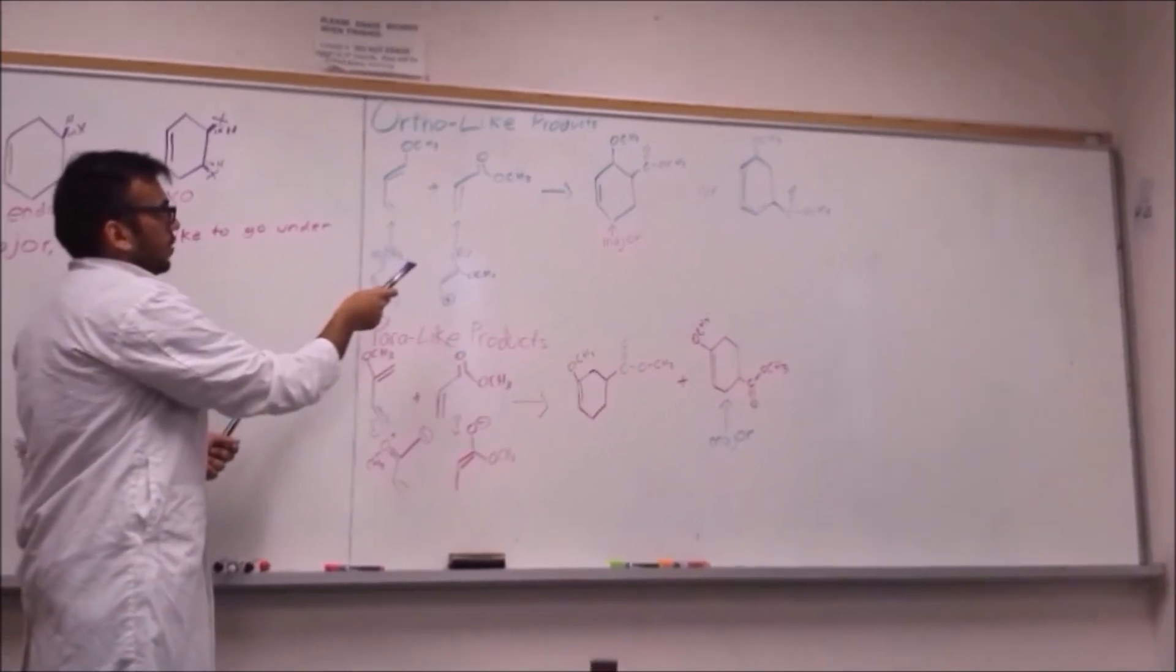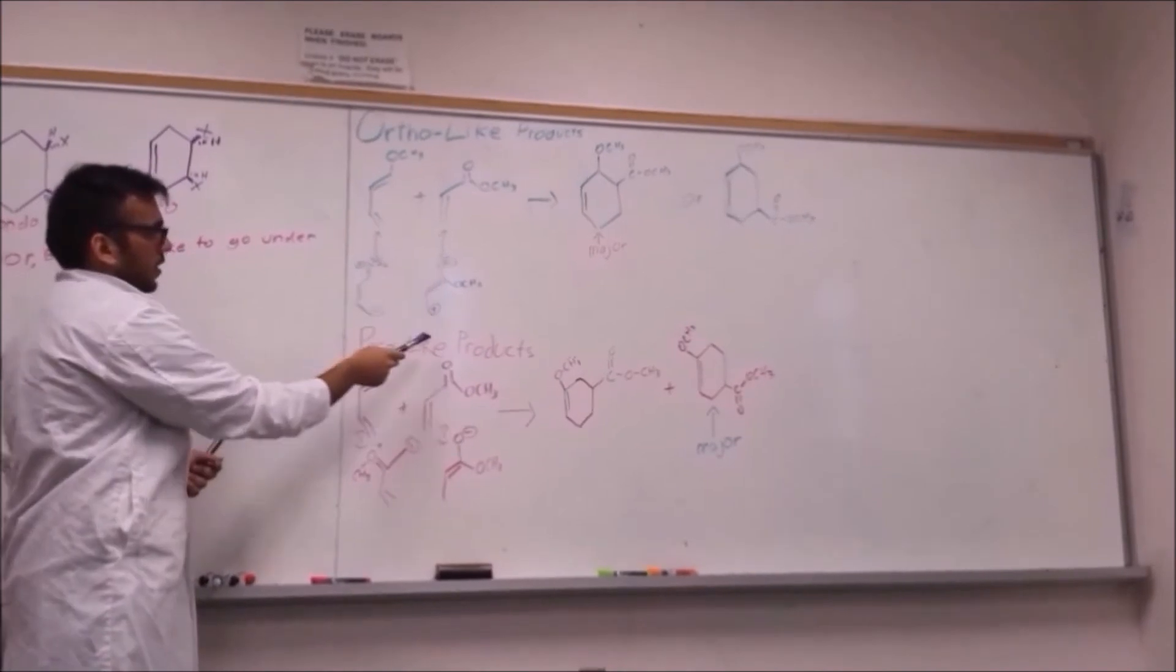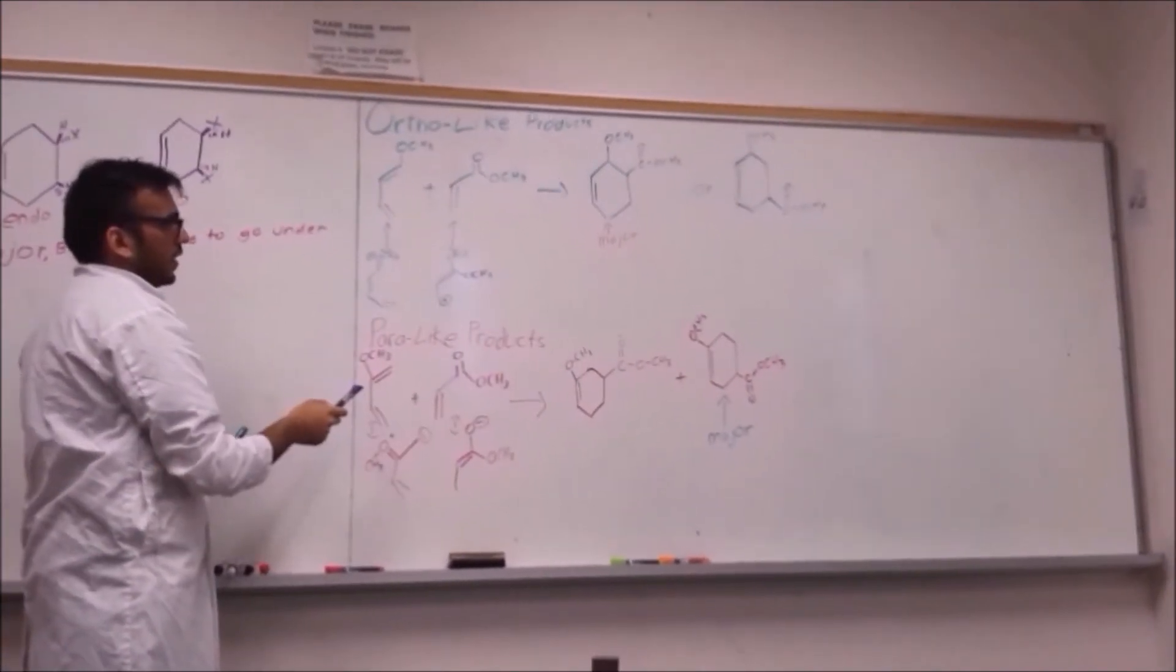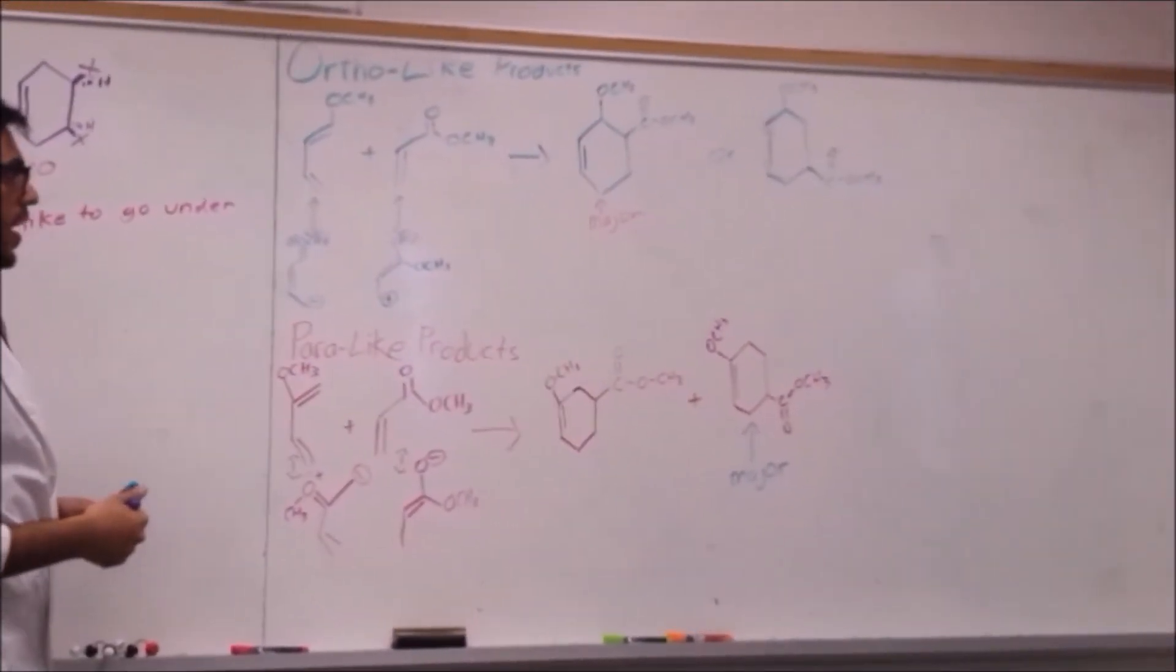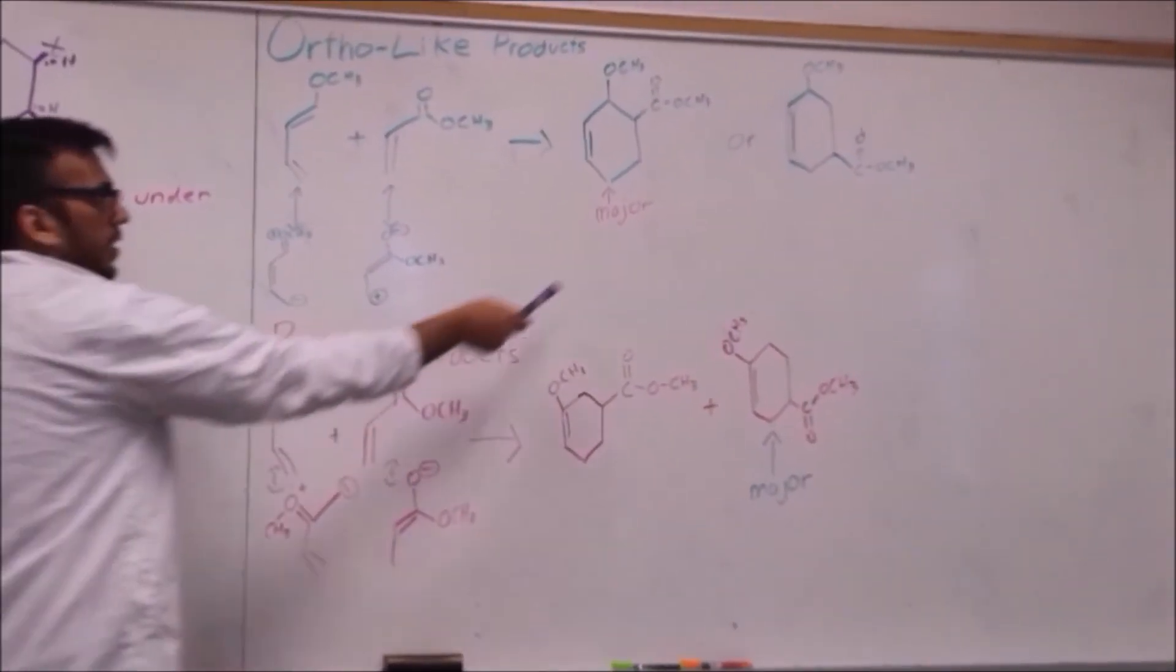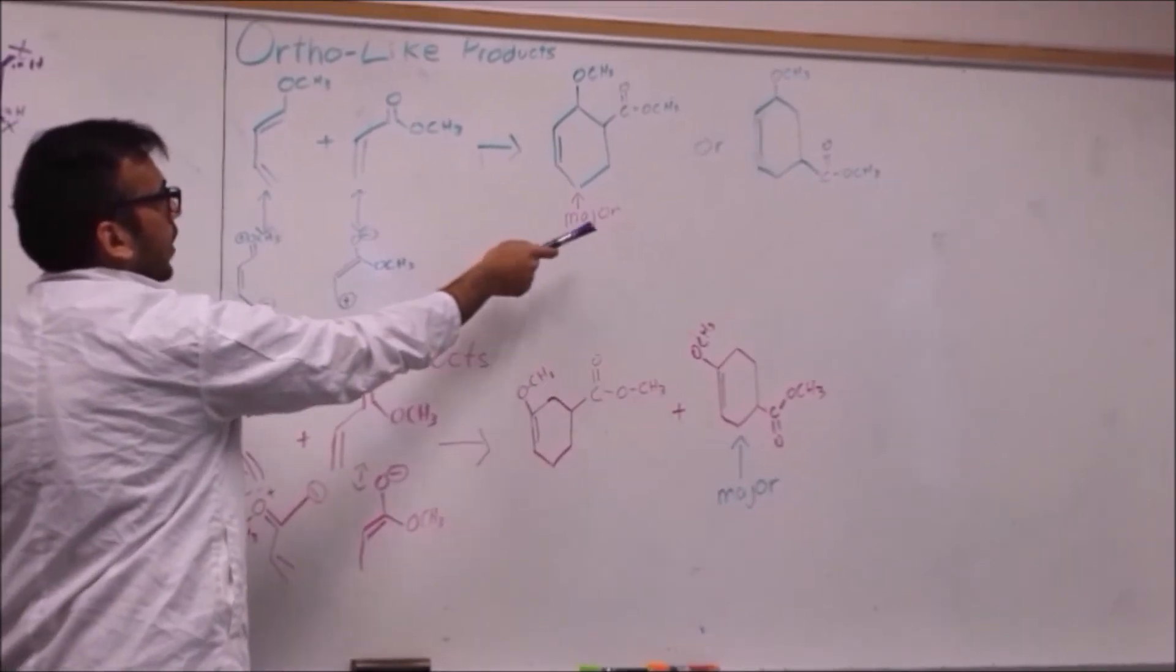And that preference can be determined by looking at the different resonance contributors of the reactants. So, if you look at the resonance contributors of these two reactants, you notice that it's these two, and they will line up in such a way that the opposite charges are lined up. And that lining up creates this major product, and this is called the ortho-like product, because both substituents are right beside each other.